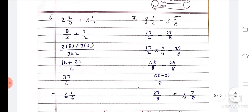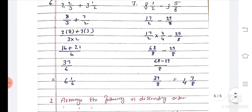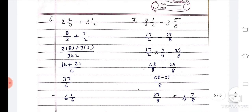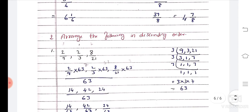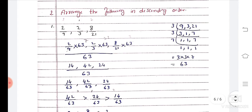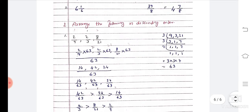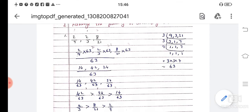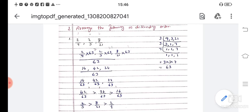Question number 6: 2 and 2 by 3 plus 3 and 1 by 2 is here. Question number 6 and 7 are your homework. Second main second question I'll give you for homework also.